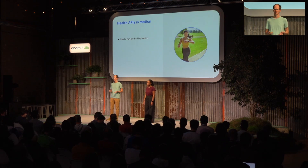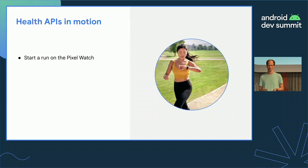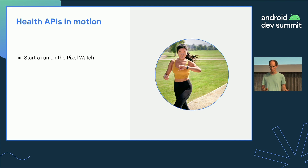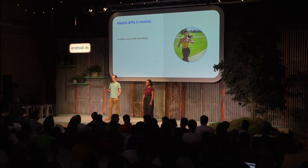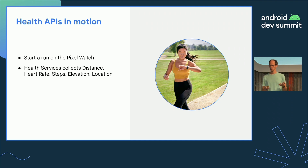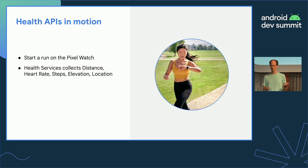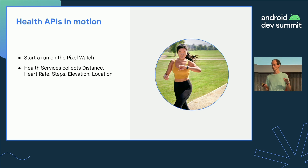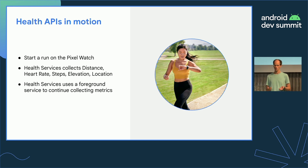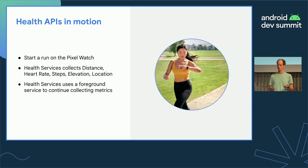Now that we've covered these two APIs, let's take a look at a possible fitness journey that could use both. You leave home — leaving your phone at home — and you start to run on your brand new Pixel Watch using your favorite running app. As soon as you set off, HealthServices starts collecting distance, heart rate, steps, elevation, location — a whole bunch of metrics that it's going to cache locally on the watch. Throughout your run, you're glancing at your watch, checking that your pace is in the right zone and heart rate is where you want it to be. While you're not looking at the watch screen, the app continues collecting data using HealthServices via a foreground service.